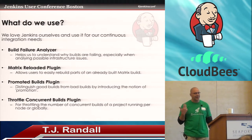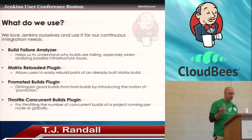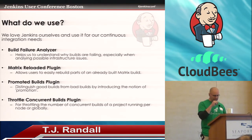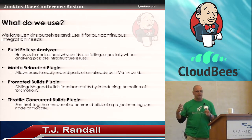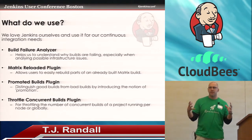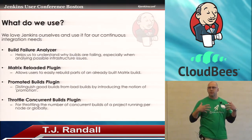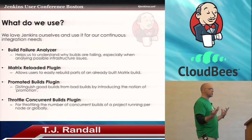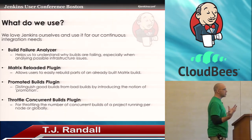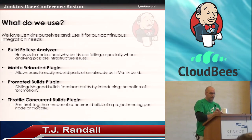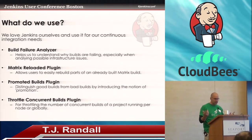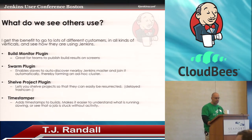We love the Build Failure Analyzer plugin—we find that cuts down a ton of time for our development teams on analyzing what's going on within your builds. The Matrix Reloaded plugin is phenomenal; it makes matrix builds much more bearable when you have to orchestrate that group. The Promoted Builds plugin is a great way to understand and distinguish between your good and your bad builds, because your dev teams are cranking more activity into your system and you have to start to understand what activity is actually valid. And for throttling, we like to use the Concurrent Build plugin—it's a pretty handy one.